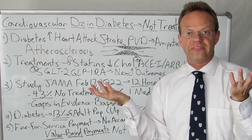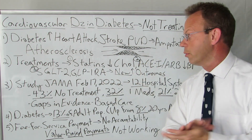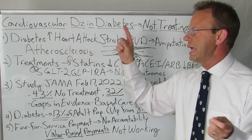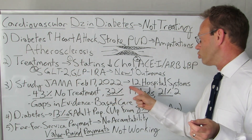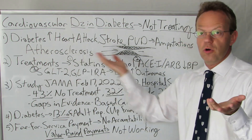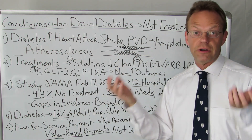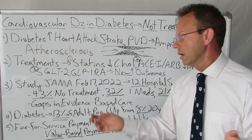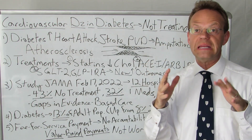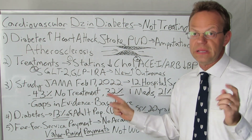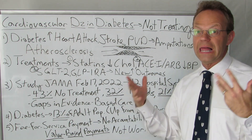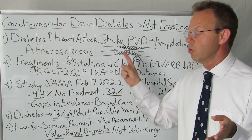So why am I bringing this up? There was a study from the Journal of the American Medical Association, published February 17th, 2022, where they looked at people with diabetes and atherosclerosis across 12 hospital systems — literally hundreds of thousands of patients across the country — and asked whether they were being treated with any of these three classes of medications. The answer: 43% of all patients with diabetes were receiving zero medications. Almost half were not being treated at all. 32% were being treated with just one medication, 21% with two medications, and only about 4% — one in 25 — were actually being treated with all three categories.